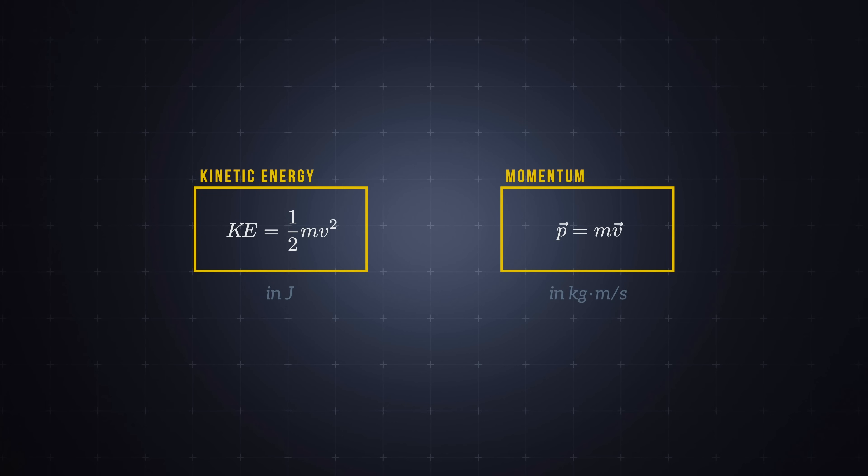Momentum is a vector quantity that represents how difficult it is to change the direction of, or stop, a moving object. Kinetic energy, on the other hand, is a scalar quantity, representing the energy an object possesses due to its motion. This energy is a measure of the capacity of the object to do work, which means applying a force over a distance, like by deforming itself or another object upon impact.